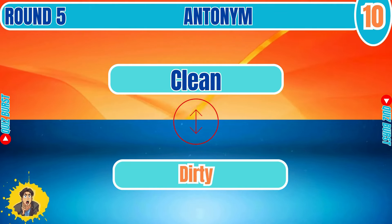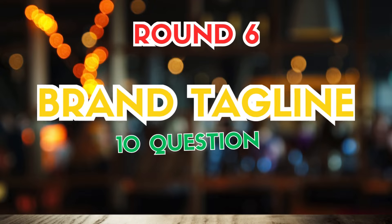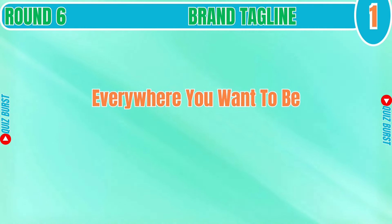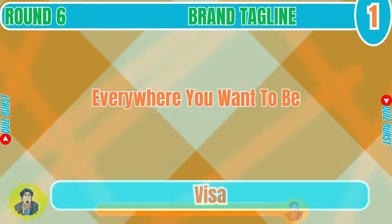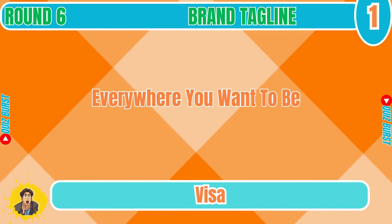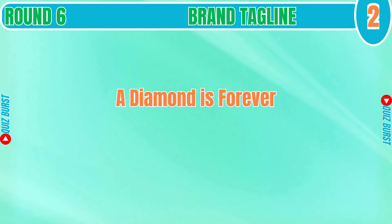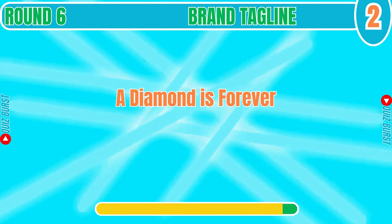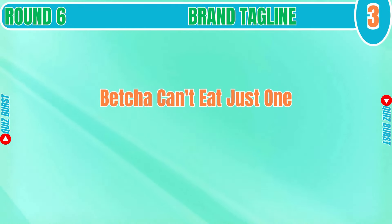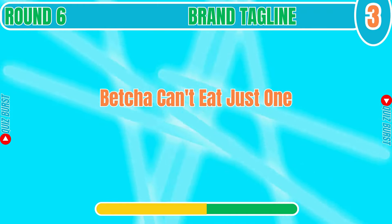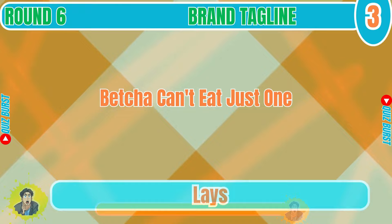Round 6: Brand Tagline. You have to guess the brand based on their tagline. Let's start. 'Everywhere you want to be' — Visa. 'A diamond is forever' — De Beers. 'Betcha can't eat just one' — Lay's.